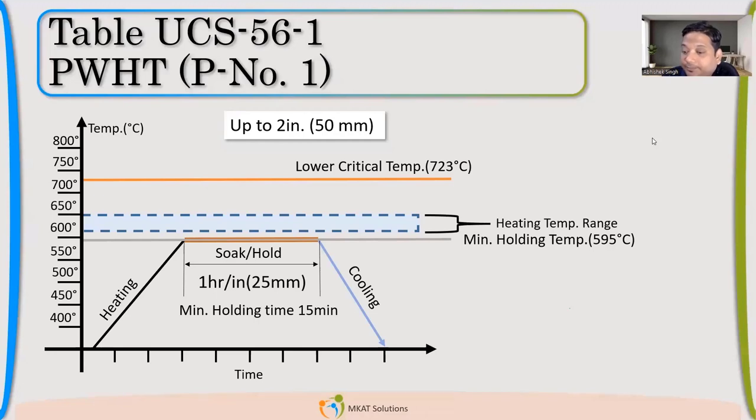So Perveen is saying 92 minutes minimum. What about this? 1.5 hours, that means 90 minutes. 60 divided by 25.4 into 38. So give the value: 1 hour, 1.5 hour. So Akash, how you arrived at 1 hour? It's more than 25, right? So 1 hour per inch, so 38mm is 1.5 inch.